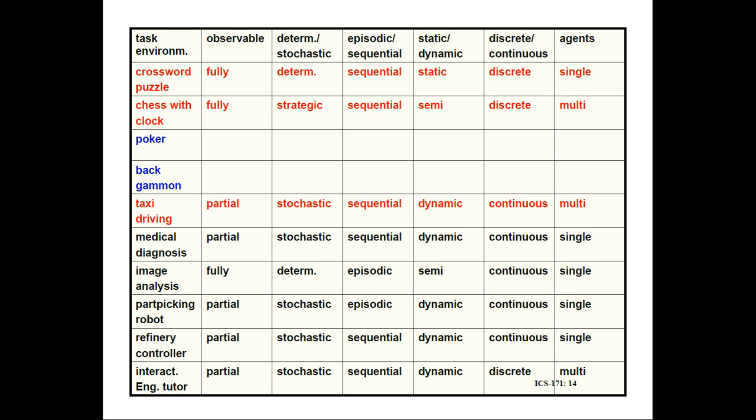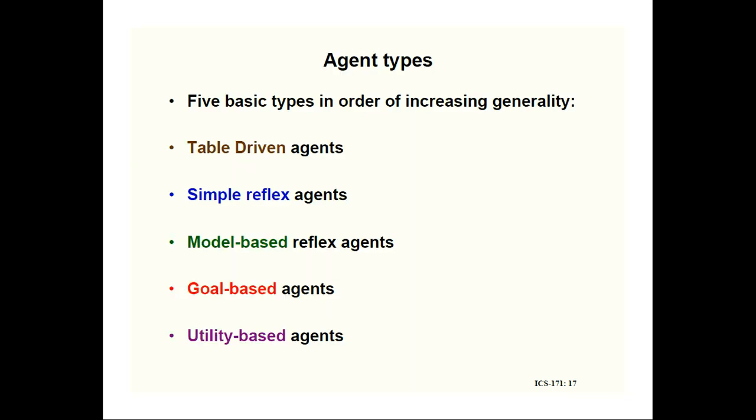Chess is fully observable, strategic, sequential, semi-dynamic, discrete, and multi-agent. If the environment is partially observable, it will lead to non-deterministic behavior — for example, poker is partial, stochastic, sequential, static, and discrete. A fully observable, deterministic, discrete environment is the easiest for the agent to operate in, whereas a partially observable, stochastic, sequential, dynamic, multi-agent, continuous environment is the toughest.